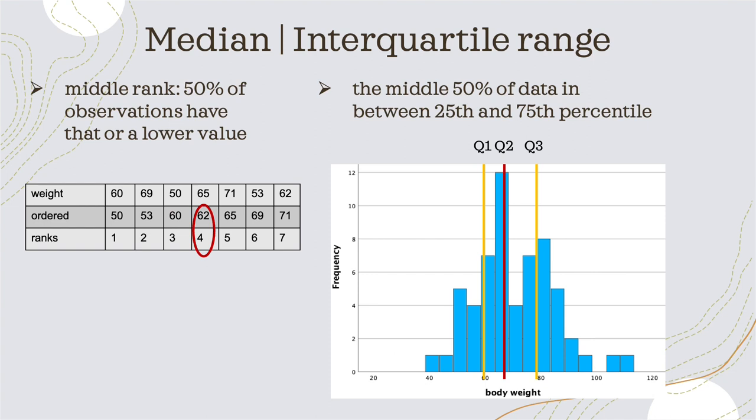Moving on to the interquartile range — that is the measure of dispersion that comes with the median. Here we look at the middle 50% of the data — the values where the data in our sample lie in between, from quartile one up to quartile three.